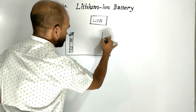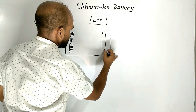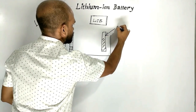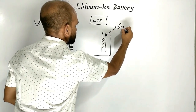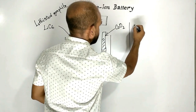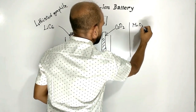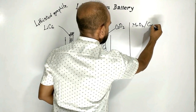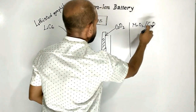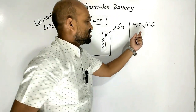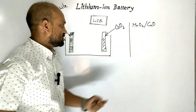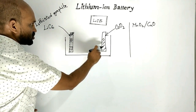Another electrode is made up of cobalt oxide. In place of cobalt oxide, we can also use manganese dioxide or copper oxide as the other electrode.